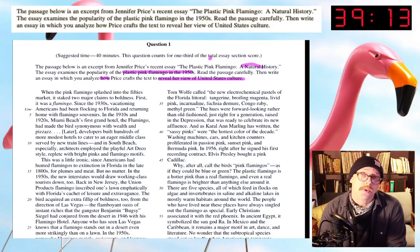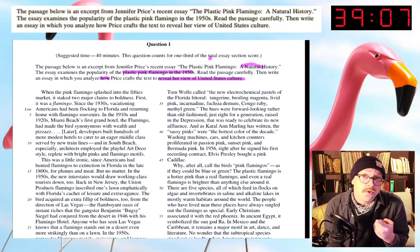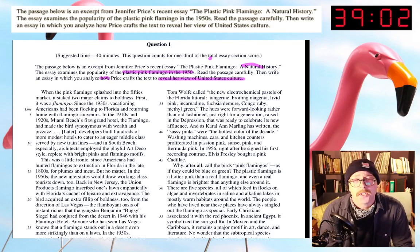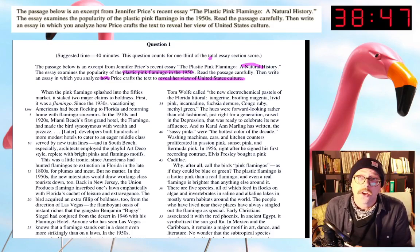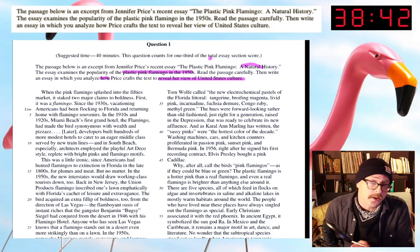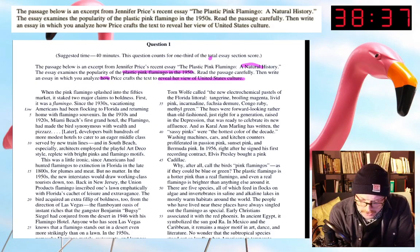In order to answer the prompt, we're going to need two things: one, we need to know what is her view on United States culture — how is she characterizing it? And two, we need to talk about specific moves she's making as a writer to reach that. So let's go through and look for that. When the pink flamingo 'splashed' into the 50s market — right away 'splashed' is interesting.